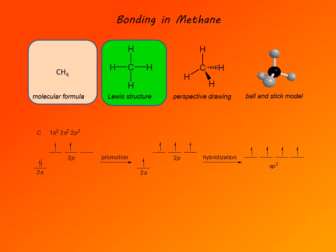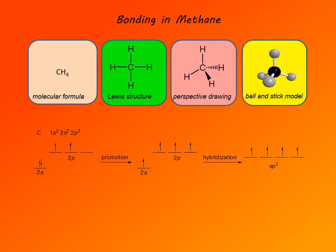Here is the Lewis structure: carbon is attached to each of the four hydrogens by single bonds. Here is a perspective drawing showing the three-dimensional structure of the molecule. Bonds in the plane of the drawing are shown as solid lines; the bond projecting towards the viewer is shown as a wedge; and one away from the viewer as a dash. Finally, here is the ball-and-stick model, and note how it corresponds to the perspective drawing.